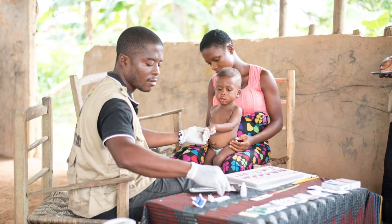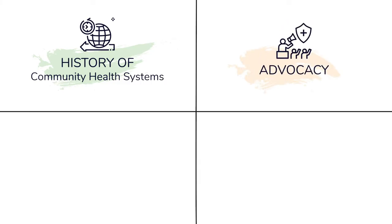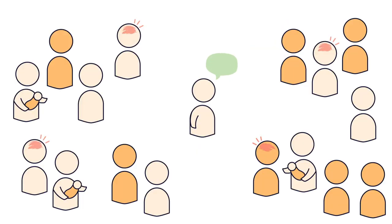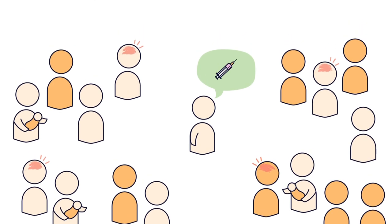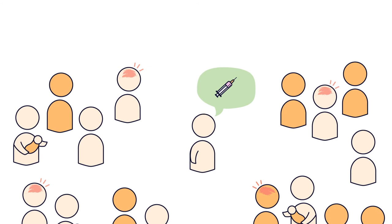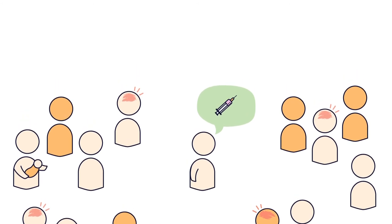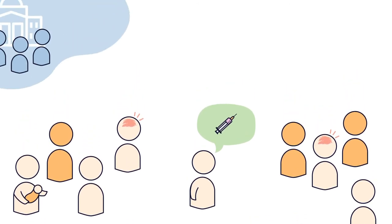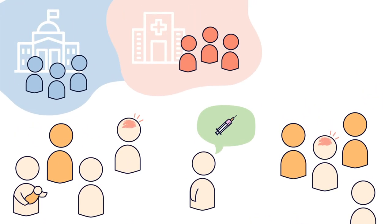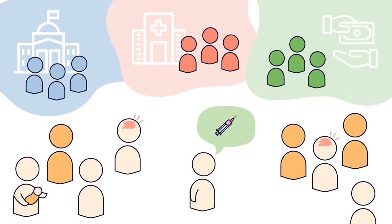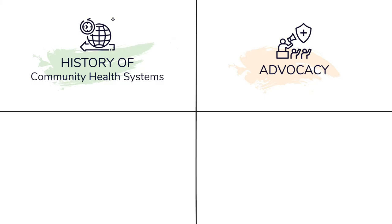The second module is all about advocacy. Advocacy is the process of building support for a cause. You'll learn about a step-by-step process to becoming an advocate for your community and for CHWs like you.